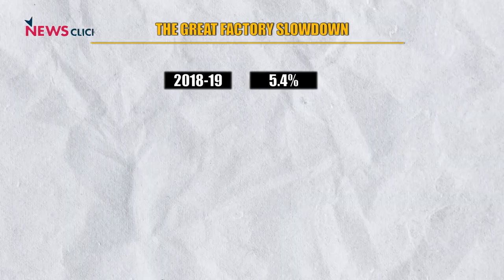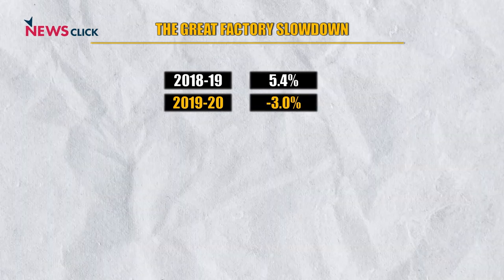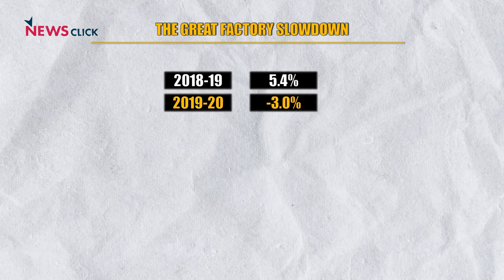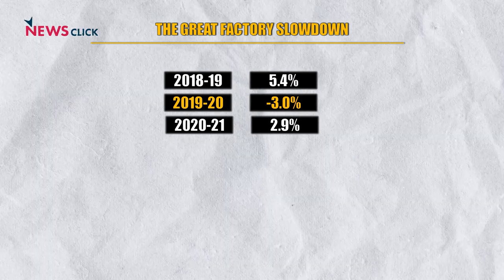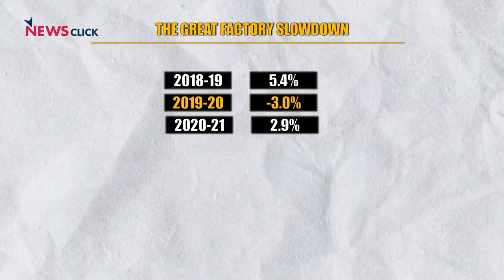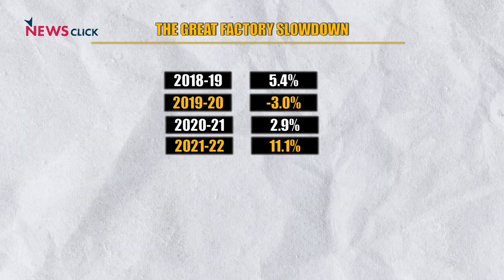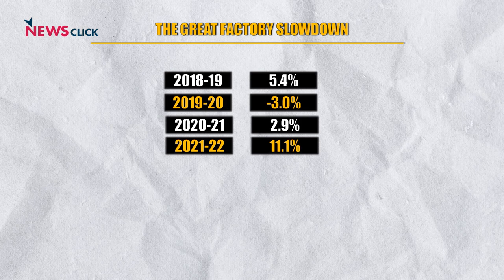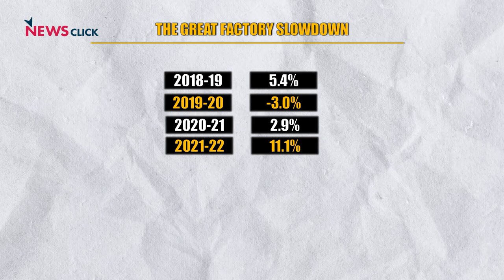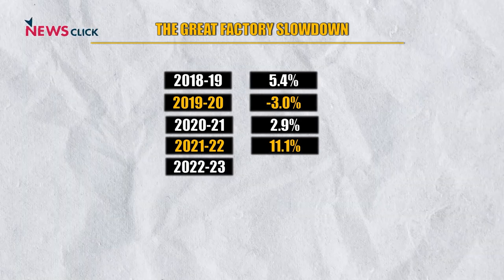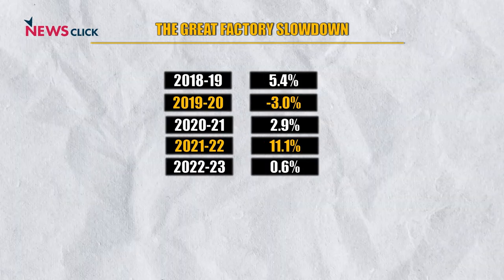If you think Covid is to blame, consider that India's manufacturing sector grew by just 5.4% in 2018-19, and then contracted by 3% in 2019-20 — both years before Covid hit. Factory output grew 2.9% in 2020-21 despite all the lockdowns, followed by a huge 11% jump as consumers and businesses rushed to make postponed purchases when the economy reopened. But this year, with no lockdown at all, our factory sector is likely to grow by just 0.6% — a fall of 0.5% in per capita terms.